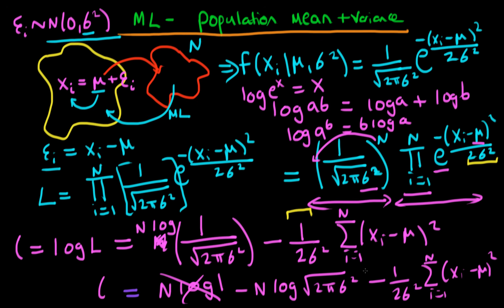Now we should be able to differentiate this log-likelihood with respect to the particular parameters we're trying to estimate, and that will define our maximum likelihood estimators for μ and σ². I'll see you in the next video.